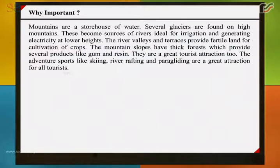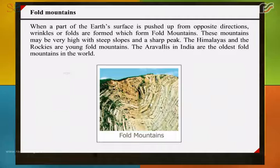Mountains are a storehouse of water. Several glaciers are found on high mountains, which become sources of rivers ideal for irrigation and generating electricity at lower heights. The river valleys and terraces provide fertile land for cultivation of crops. The mountain slopes have thick forests which provide products like gum and resin. They are also a great tourist attraction, with adventure sports like skiing, river rafting and paragliding.